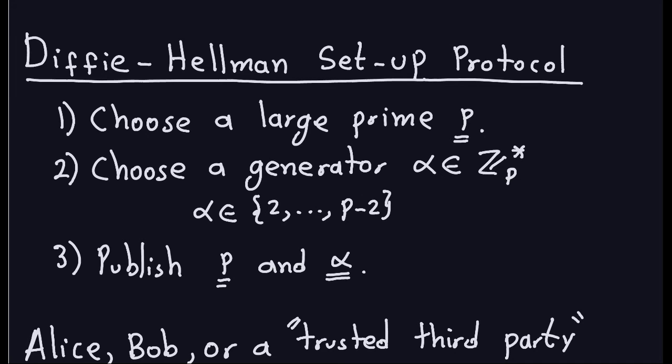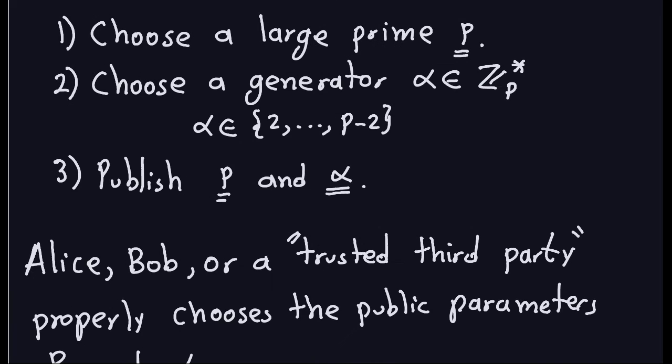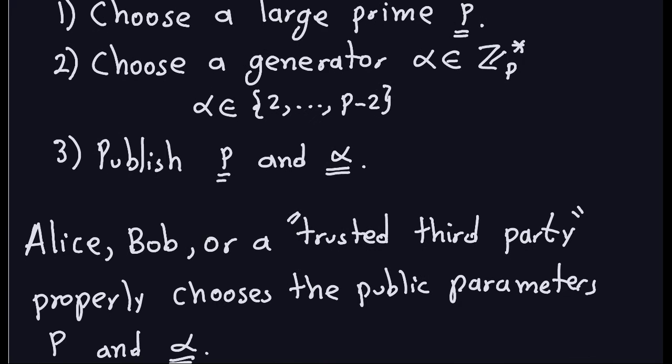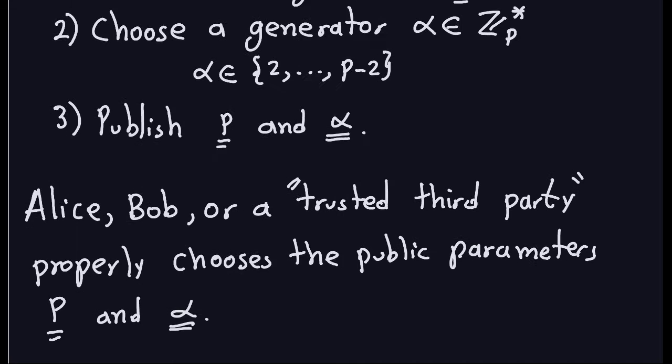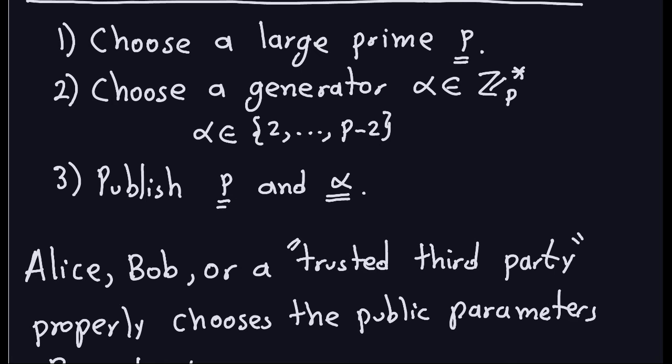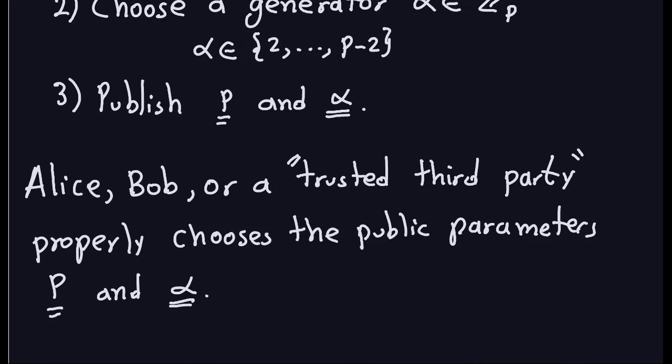Everyone will see P and alpha — including Eve, the attacker — but that's not a problem. Who chooses P and alpha and who publishes them? It could be either Alice or Bob, the parties interested in the communication, or a trusted third party that properly chooses the public parameters P and alpha. So the setup process is: take a large prime number P and a generator alpha of Cp*. P has to be large.